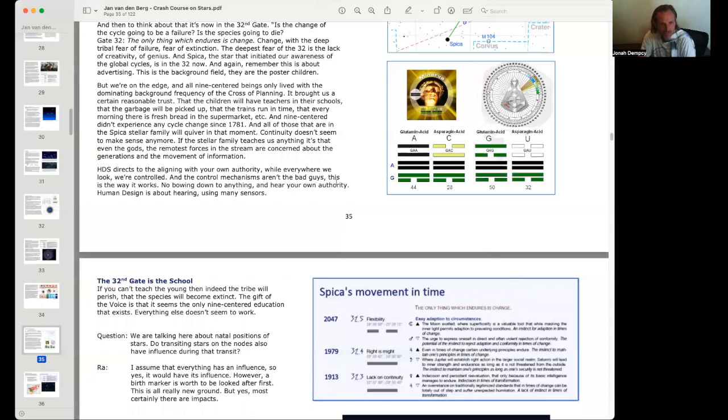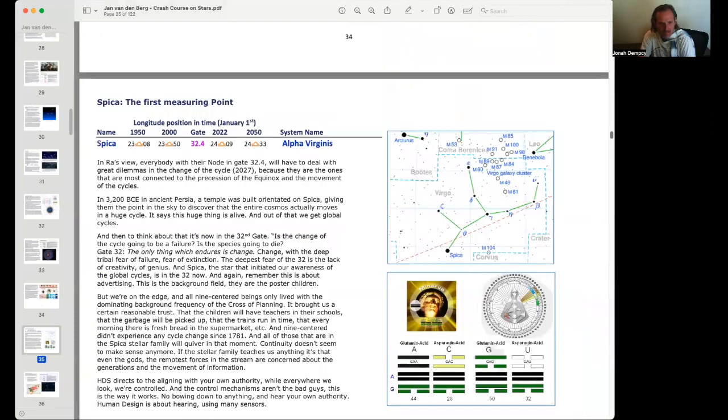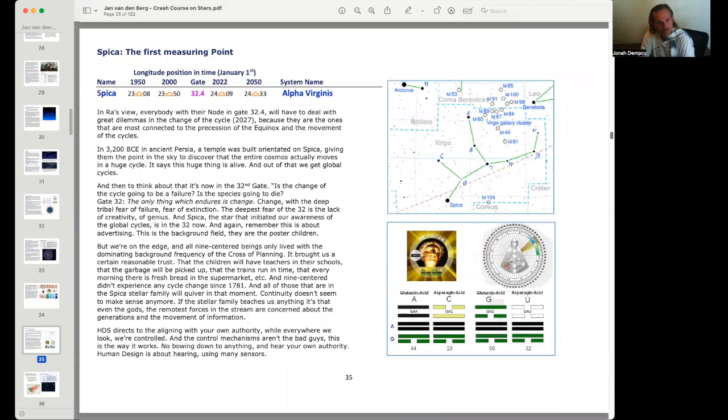Alright, and so to continue, we're going to take a look at Spica. This is from Jan van den Berg's Crash Course on Stars. Spica, the first measuring point. We see that in 1950 it was at 23 degrees Libra, and you can see how slow this movement is. It takes 70 years to go a degree, roughly 72 years.